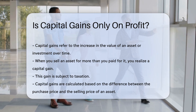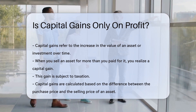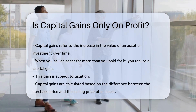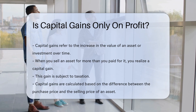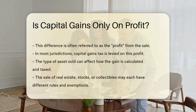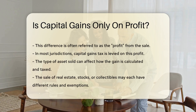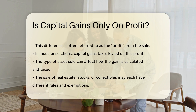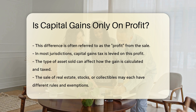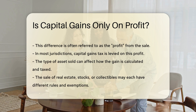It is crucial to understand that capital gains are calculated based on the difference between the purchase price and the selling price of an asset. This difference is often referred to as the profit from the sale. In most jurisdictions, capital gains tax is indeed levied on this profit.